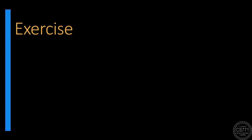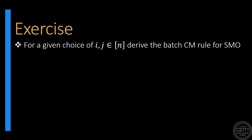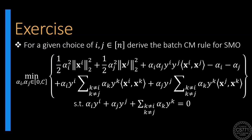As an exercise, it would be nice to derive the batch coordinate minimization rule used in the SMO algorithm. Suppose we have chosen two coordinates i and j. Here we have shown the portion of the dual objective function and the dual constraints that depend on alpha_i and alpha_j.